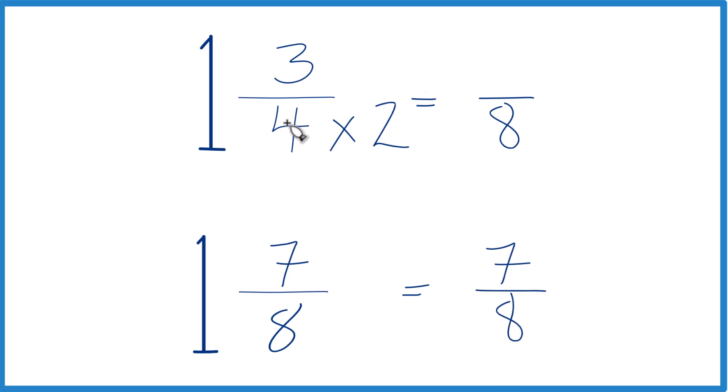But we can't just multiply 4 by 2. We also have to multiply the numerator by 2. That's because 2 over 2 is just 1, so we're not changing the value, we're just changing the way it's represented. 3 times 2 is 6, and 6/8, that's an equivalent fraction to 3/4. They have the same value.